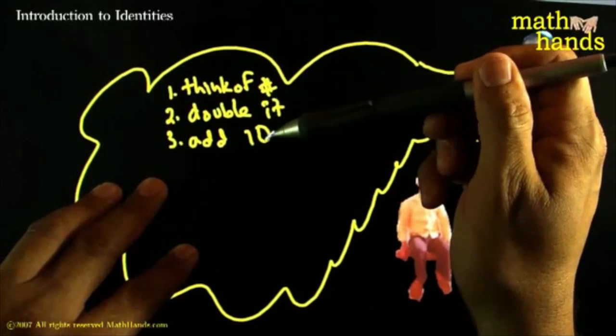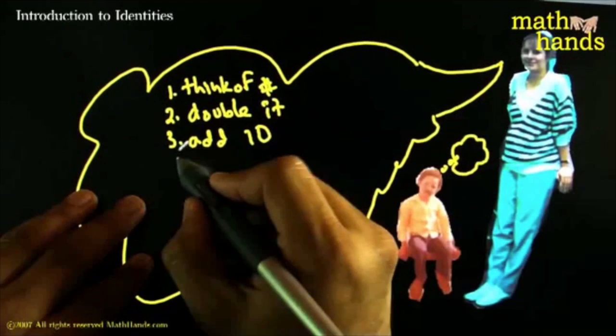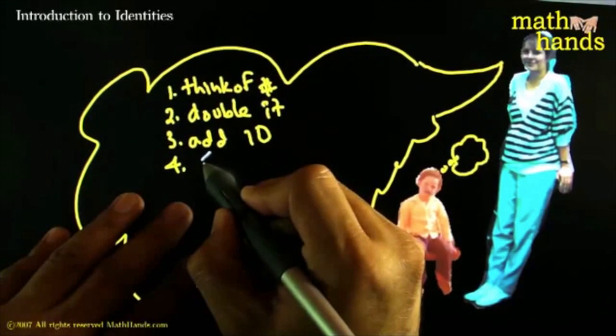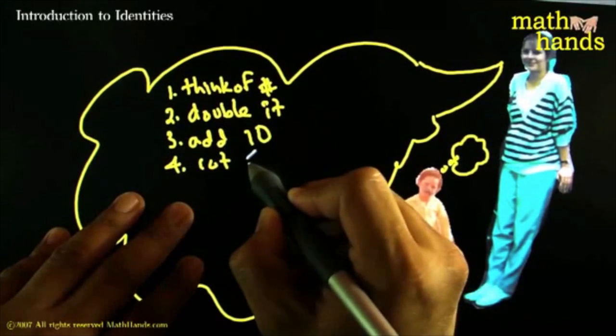Think of a number. Double it. And add 10 to it. And then she would say something like, Cut whatever you got. Cut it in half.